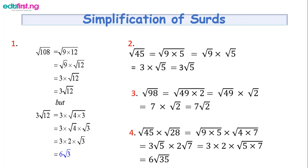The second example is root 45. Find two numbers that multiply to give 45, with one being a perfect square. We have root 9 times root 5. Root 9 is 3, so we get 3 times root 5, which is 3 root 5.